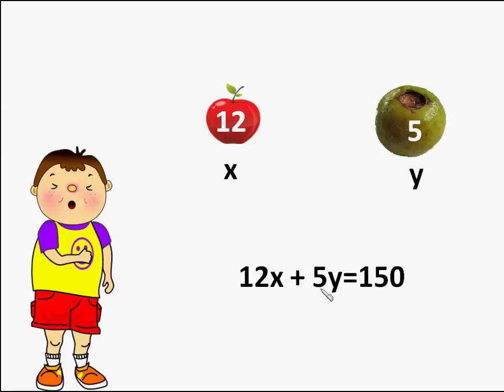Same way, cost of y guavas will be 5y. So 12x plus 5y has to be equal to 150 rupees because that is the total amount of money for which I am exchanging the fruits.